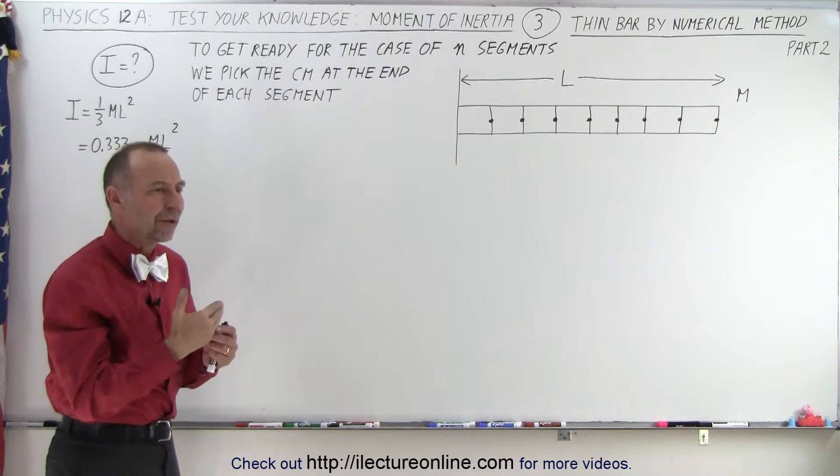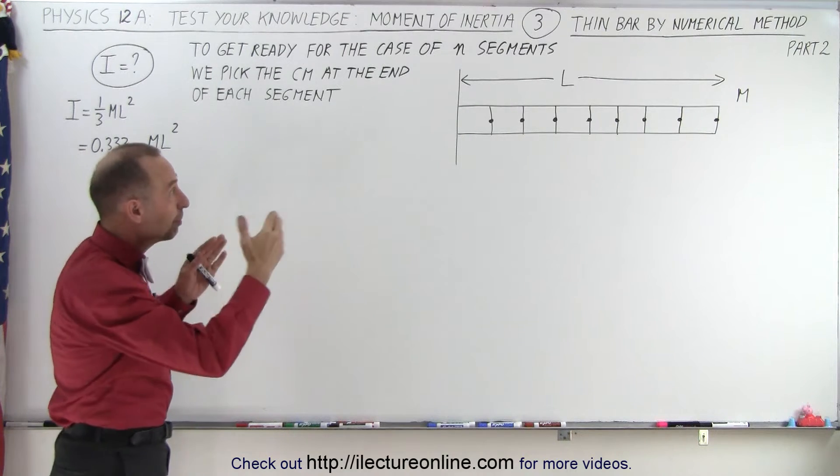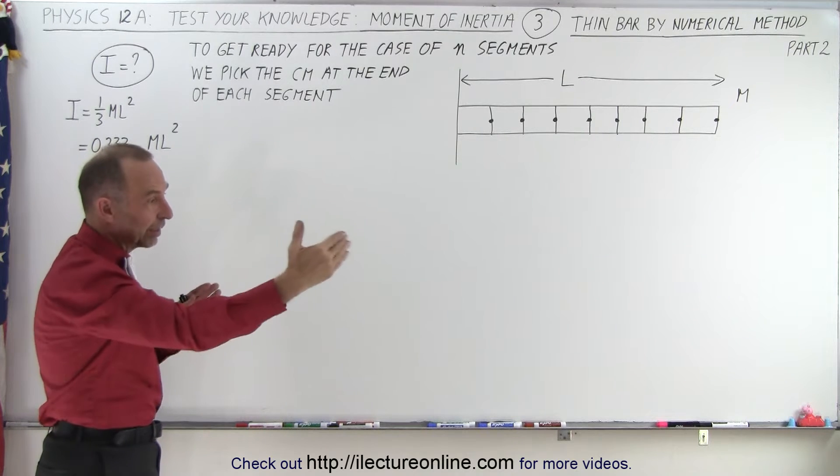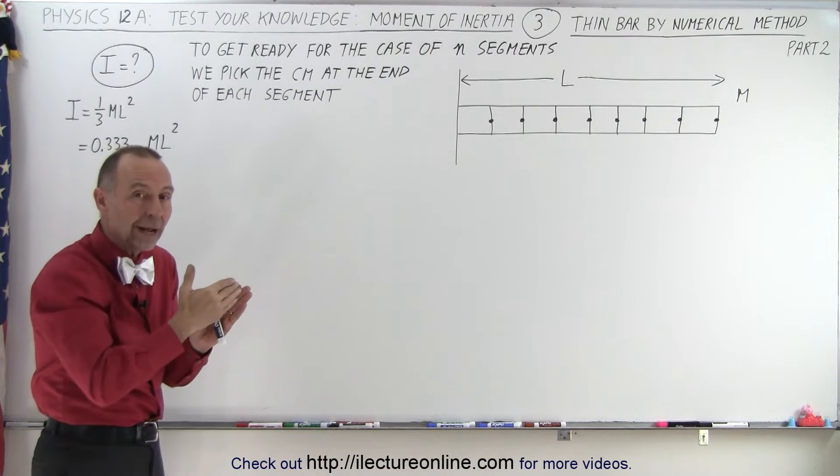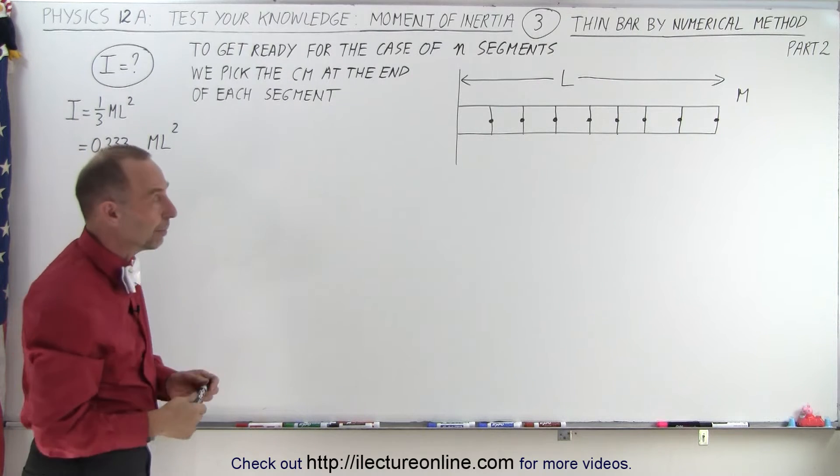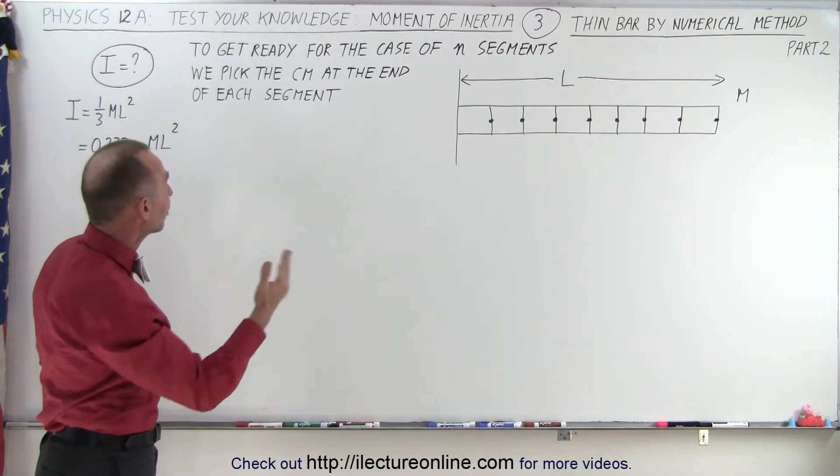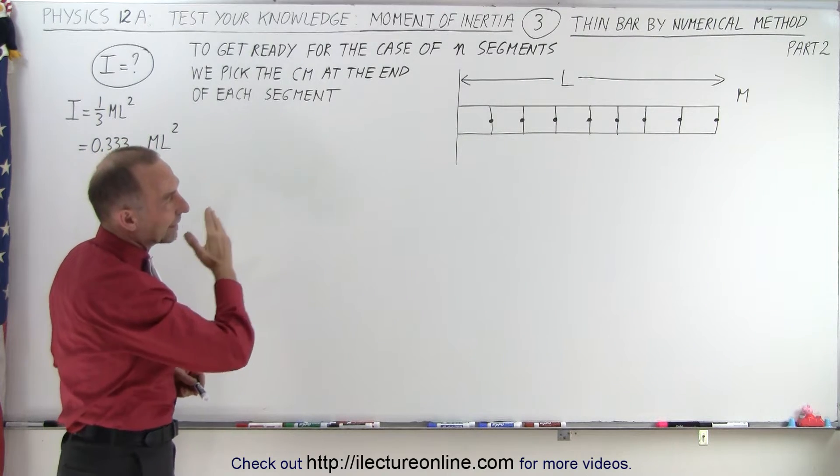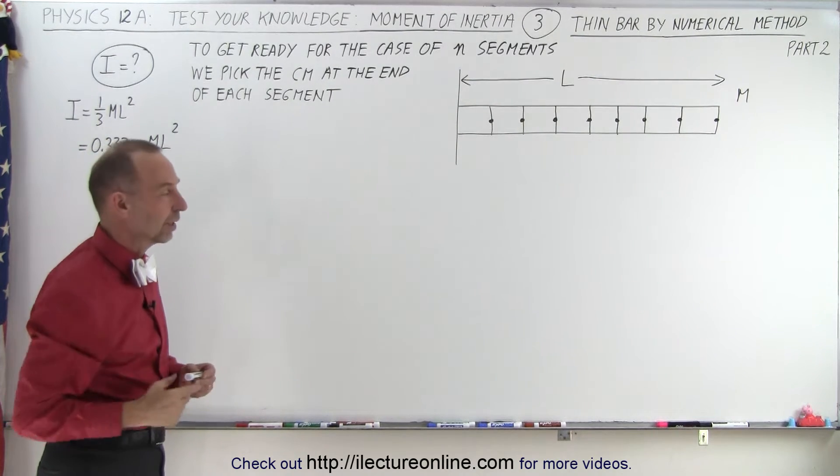Well, that will cause us to have a moment of inertia a little bit bigger than what we'd expect, and then as we increase the segments, the number is going to converge to the right value from above instead of from below the way we did it on the previous example. So let's go ahead and do that. Let's find the moment of inertia for 8 segments, but now with the center mass at the end of the segment instead of at the middle of the segment.